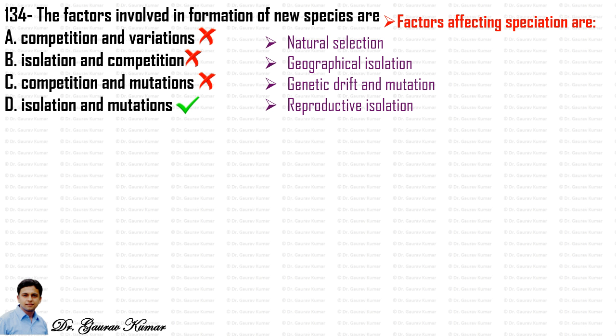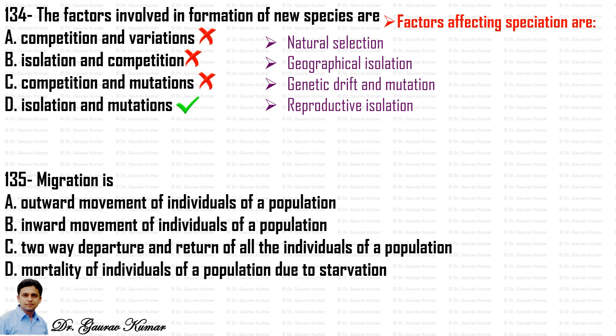Next question: migration is — what? Migration is a two-way departure and return of all individuals of a population, moving from their native place to a new place during unfavorable conditions in search of favorable conditions, and returning when favorable conditions are restored. It is very common among migratory birds.